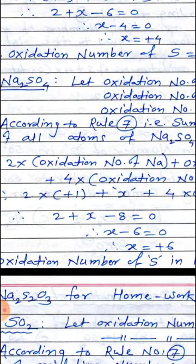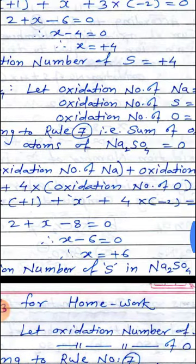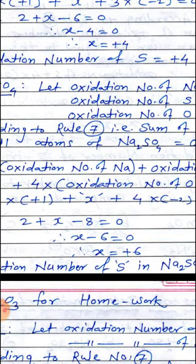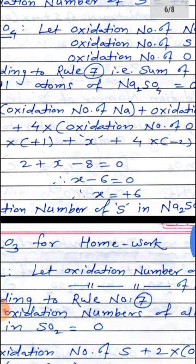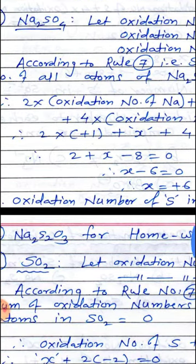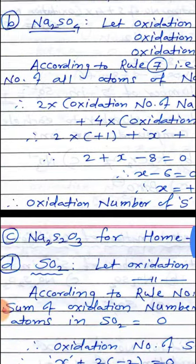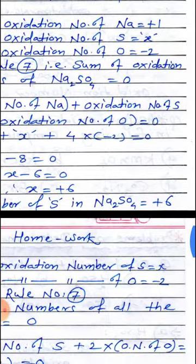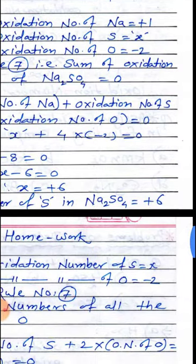Hence we have the equation: 2 plus x minus 8 equals 0, so x minus 6 equals 0, therefore x equals plus 6. So plus 6 is the oxidation number of S in Na₂SO₄.